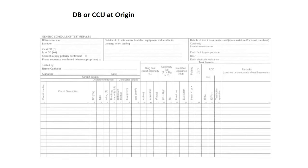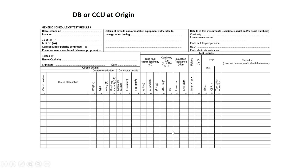On the schedule of test results for the distribution board or consumer unit at the origin, the top left-hand box where you can see ZS at dB — that's where we now write that value. In this example, it was exactly the same as the ZE. However, we still write it on even if it's the same. In a domestic environment, it can often be the same, or with parallel paths connected it could be slightly lower. You just do the test as shown and write the value in this box on the schedule of test results.